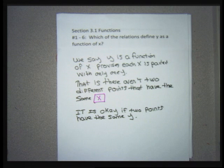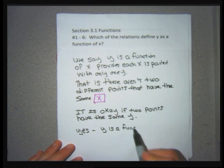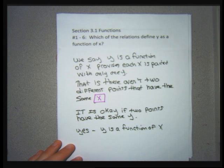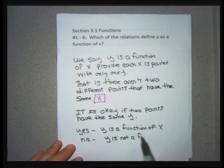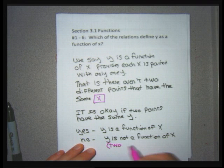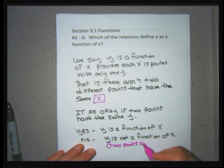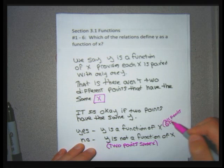For problems 1 through 6, my answer will be yes or no. Yes means y is a function of x — there are no two points with the same x. No means y is not a function of x — there are two points with the same x. I write no if there are two points with the same x, and yes if all points have different x's. There's no algebra; the problems go quickly.